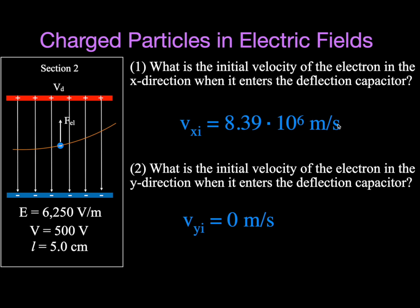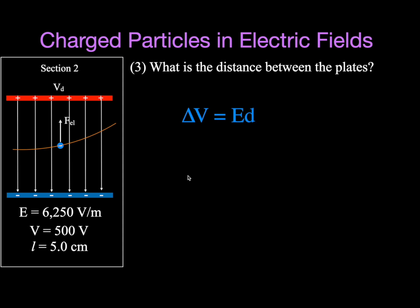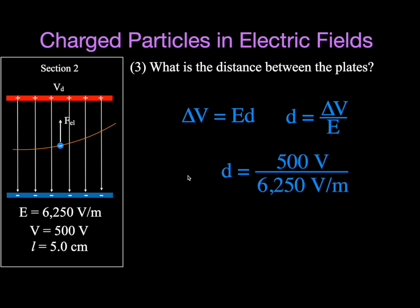When it enters the plates, it's going to start moving in the y direction. We want to know the distance between the plates. Using the same equation — voltage equals electric field times distance — we rearrange for distance and plug in the voltage as 500 volts and the field strength of 6,250 volts per meter. The distance between the plates is 8 centimeters.